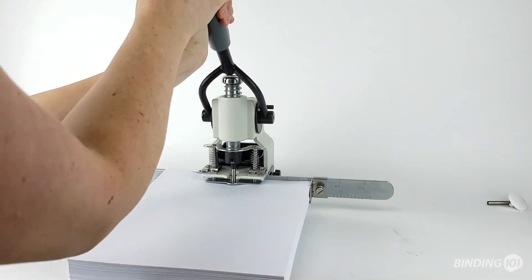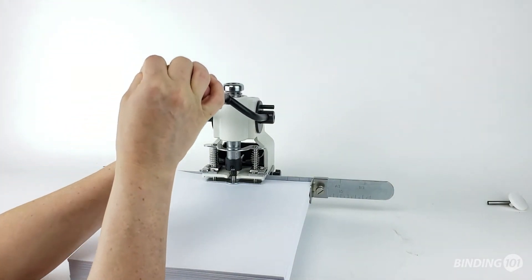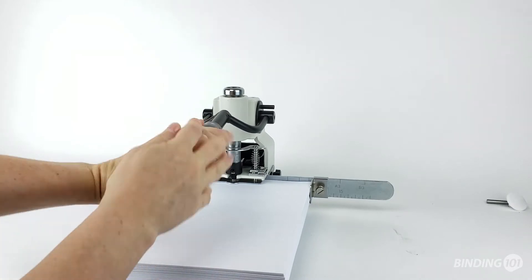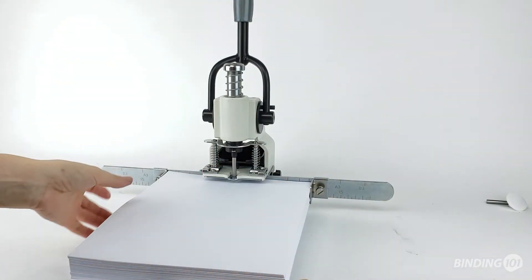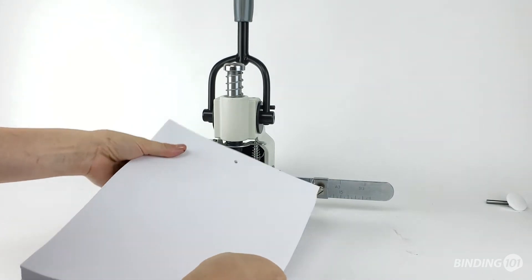Once the paper is in place and the clamp is down, you can use both hands to pull down on the handle, punching a hole through the stack. Now press the tabs on the clamp to release it and remove your stack to reveal your punched paper.